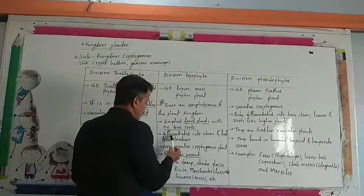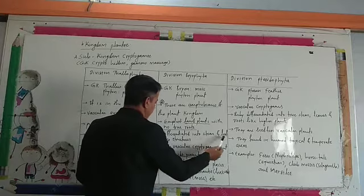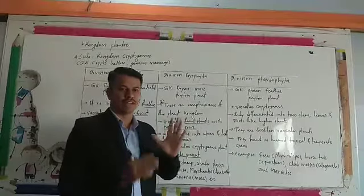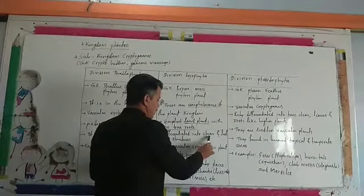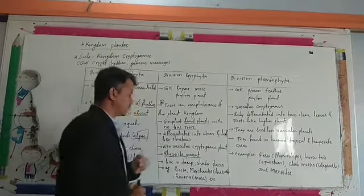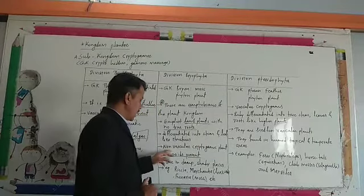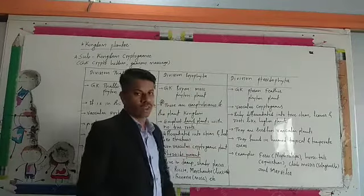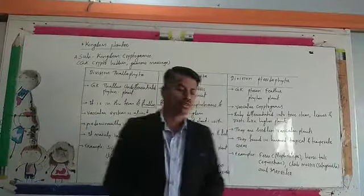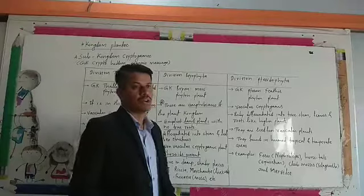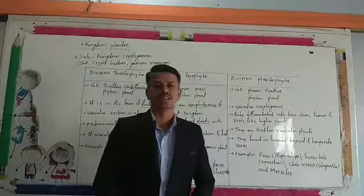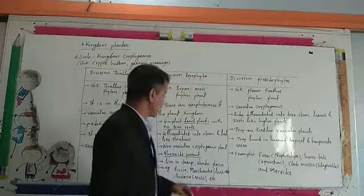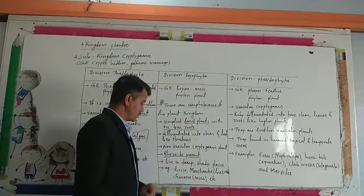The plant bodies are differentiated into stem and leaf-like structures, because they have flattened structures. They are non-vascular cryptogamic plants, meaning there is no special tissue — xylem and phloem are absent — for the conduction of water and food.